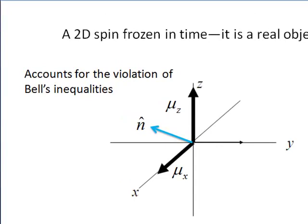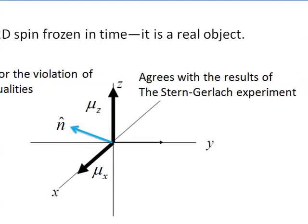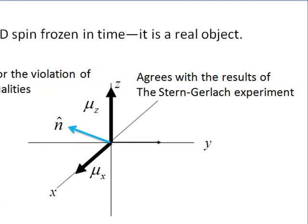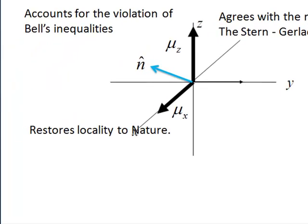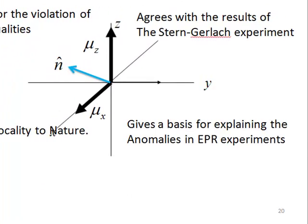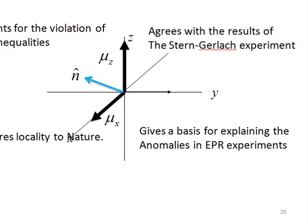Well, it describes a correlation that leads to the violation of Bell's inequalities without entanglement. It agrees with the results of the Stern-Gerlach experiment. When passed through a magnetic field, a spin splits into two states. It restores locality to nature and gives a basis for explaining the anomalies in EPR experiments.